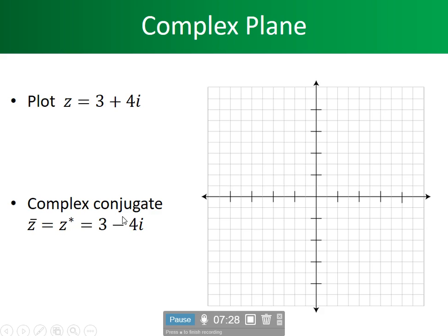We also want to be able to take the conjugate. When we talk about the conjugate, it's denoted with a star or a line over it. The conjugate does not change the real component or the magnitude of the imaginary number — all we're doing is changing the sign of the imaginary part. When we multiply a complex number by its conjugate, we get a real number: 3×3 = 9, 4×4 = 16, and j squared = -1, so -1 times -1 gives a positive 16. The result is 9 + 16 = 25.